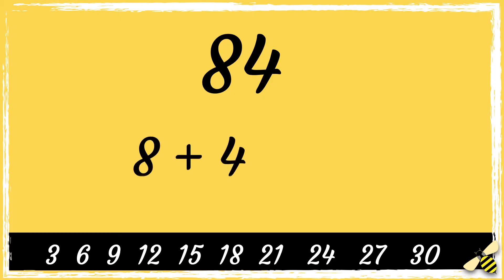So first we add the digits. 8 add 4 equals 12. 12 is a multiple of 3, which means 84 is divisible by 3.